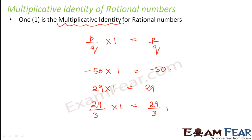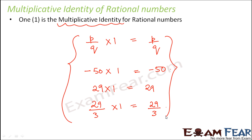This also holds true for 0, because when you multiply 0 by 1, you get 0 — you still get the same number. So this applies for all numbers including real numbers, integers, natural numbers, whole numbers, and rational numbers. For all rational numbers, any number multiplied by 1 gives the same number.